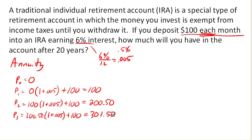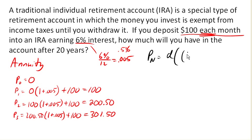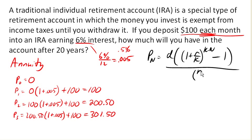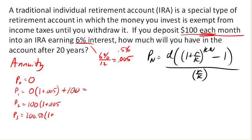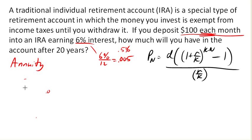We end up having a nice equation for this growth: P(N) = D × ((1 + R/K)^(K×N) − 1) / (R/K). R, K, and N are what they were before with compound interest — R is the interest rate, K is the number of compounds per year, and N is the number of years. The new variable here is D, which is our regular deposit amount.